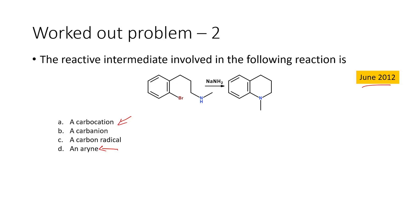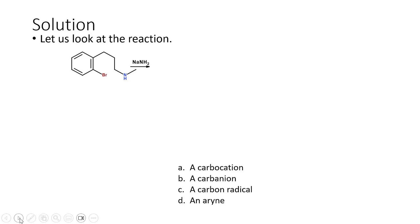Before we move to the solution, we look at the reagent used in this reaction. Sodium — NaNH2 — is used, which is a strong base. We must keep that in mind because it is very essential when solving this problem. We also have an electronegative bromine atom present in the aromatic ring.